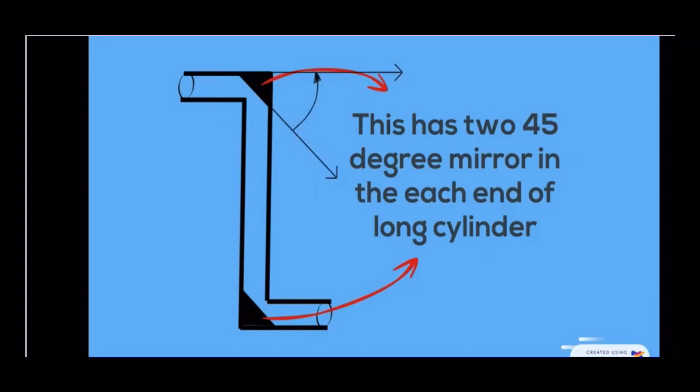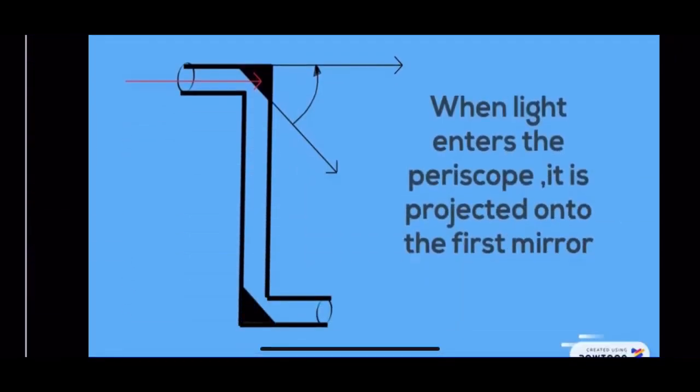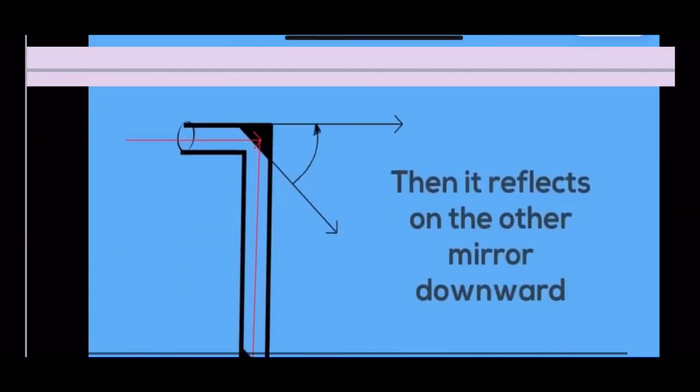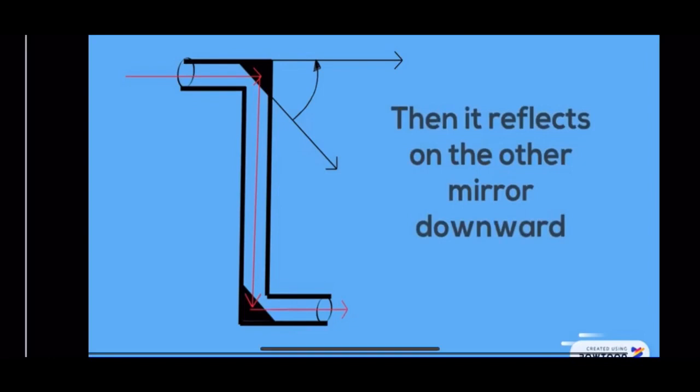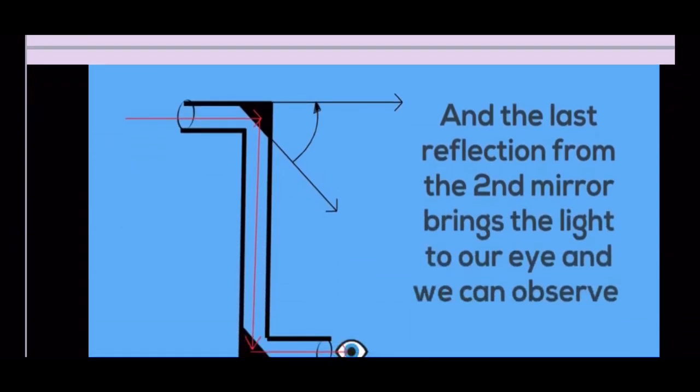Let us understand the working of periscope step by step. The light rays coming from the object fall on the plane mirror at the top of the tube. These rays are incident rays and get reflected at a right angle and then fall on the plane mirror at the lower end of the tube. Here, the rays are again reflected and turn through the right angle and enter the eye of a person. This is how an object that is not on the same level can be seen in a periscope.